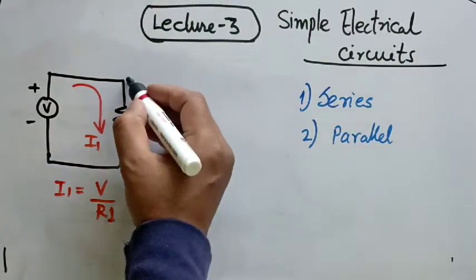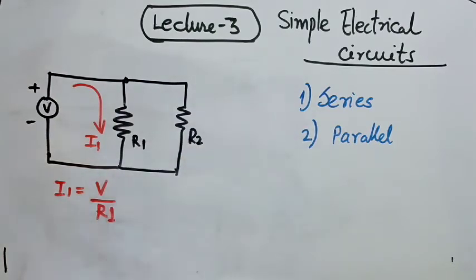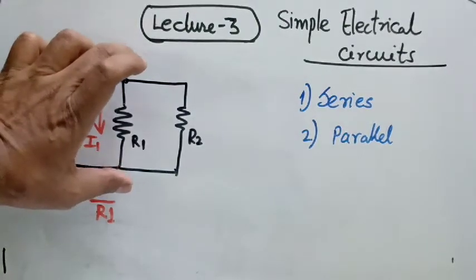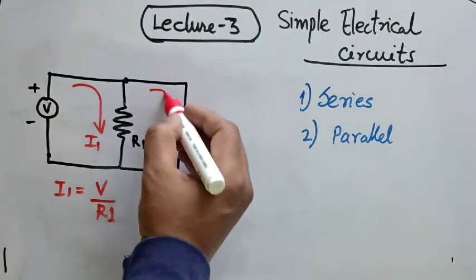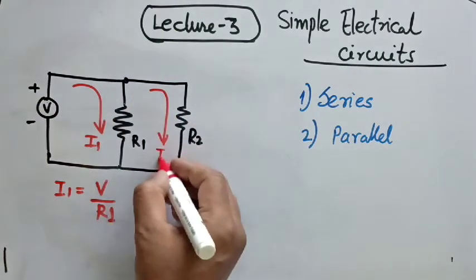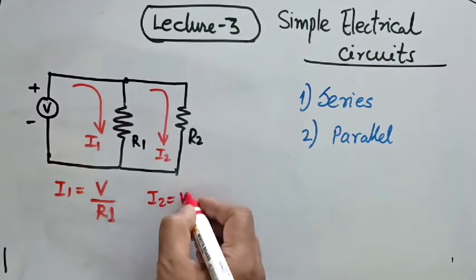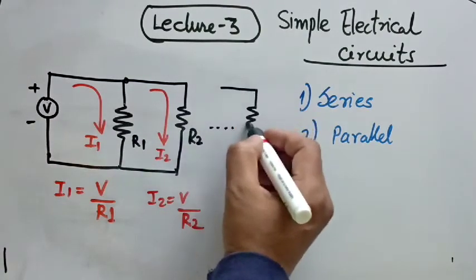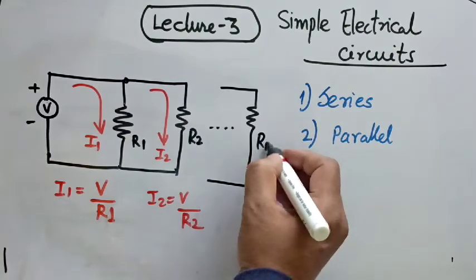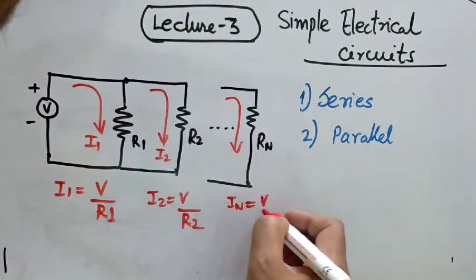Now let us assume we put one more resistance in parallel, say resistance R2. The voltage across these two terminals continues to be V, as the main voltage source is the same terminal. The current flowing through these two terminals, again controlled by Ohm's law, will be this voltage V divided by R2. And so on and so forth — if you connect more resistances in parallel, say Rn, there will be more current flowing through it, which will be In, basically voltage V divided by Rn.